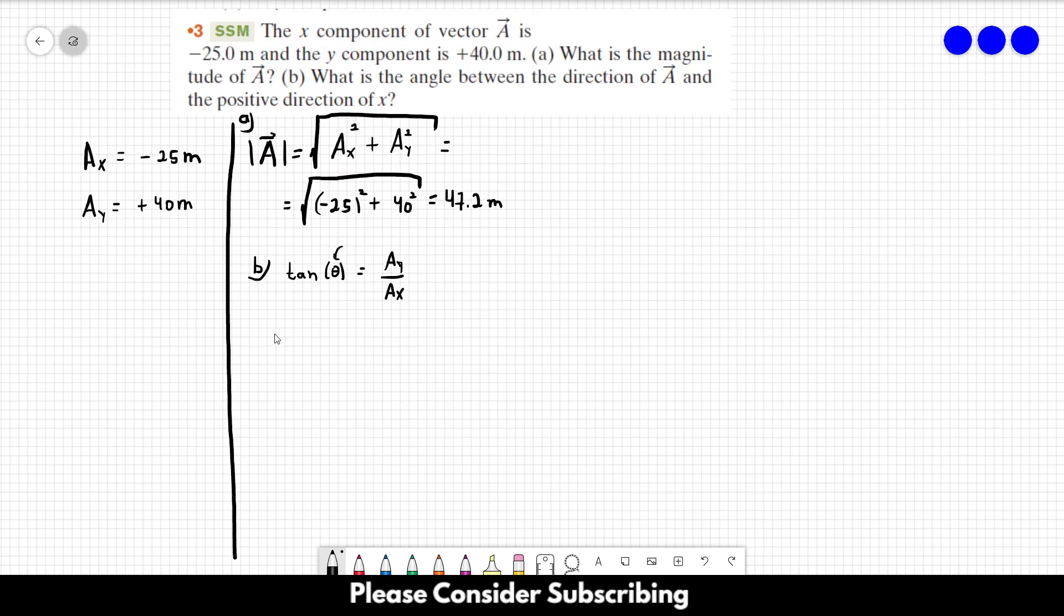So, if you want to find the angle, the angle is the arctangent or tangent to the minus 1 of Ay over Ax. Which in this case, would be plus 40 over minus 25.